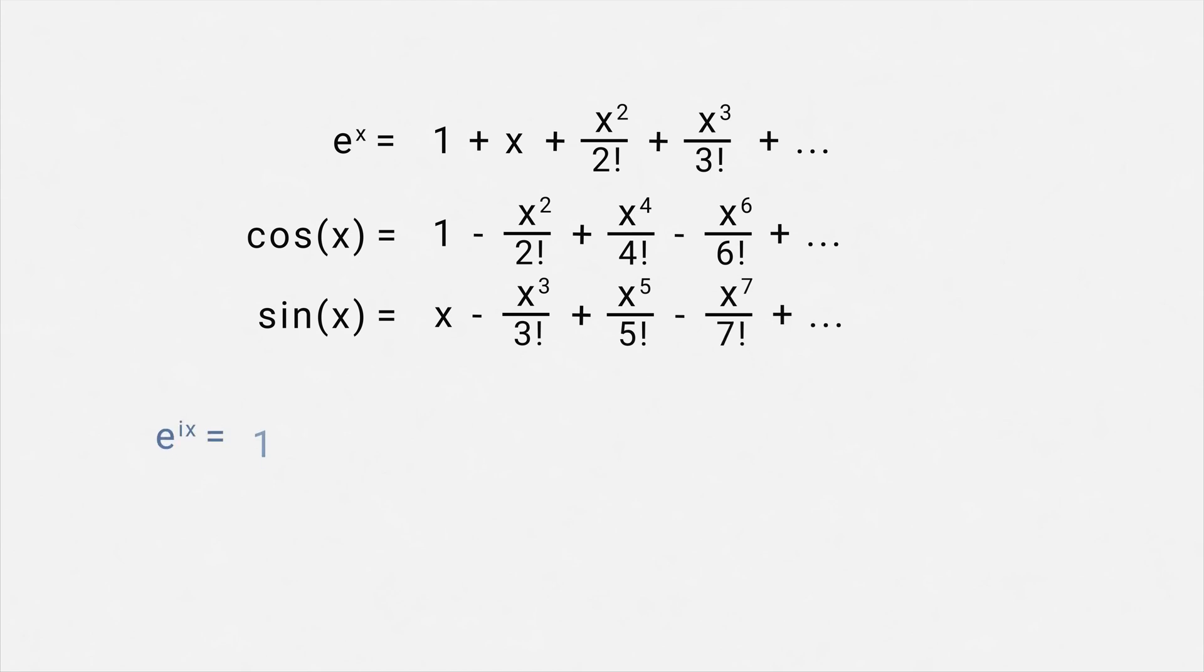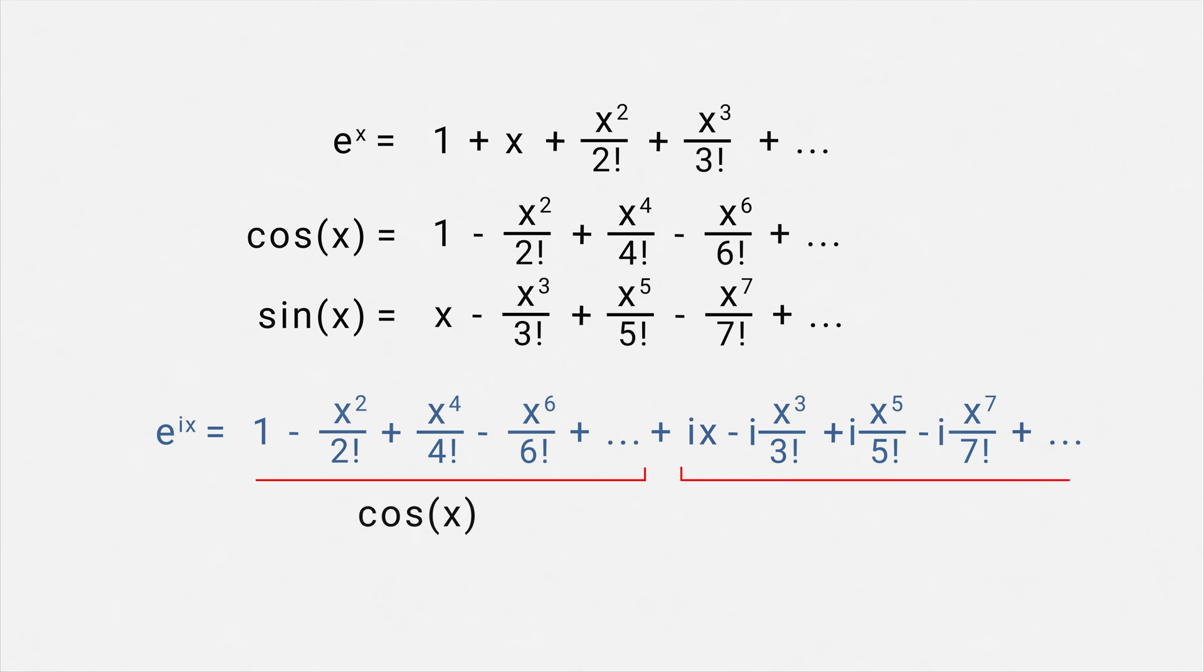Now if we plug in ix instead of x in the Taylor series expansion of e raised to power x, and group the real and imaginary terms together, we get exactly the same as the Taylor series expansion of cos x plus i sin x. And this is Euler's formula, proven using Taylor series expansion.